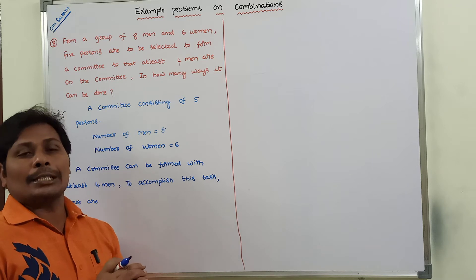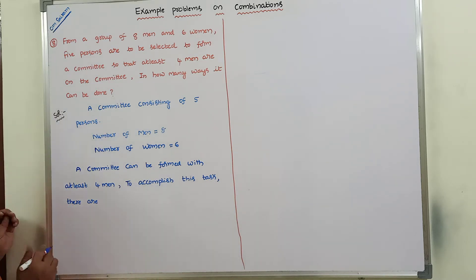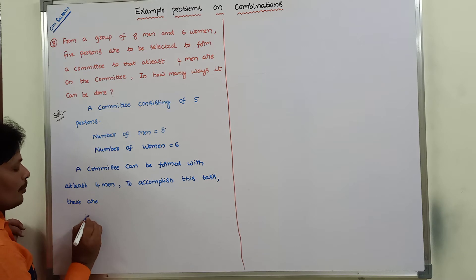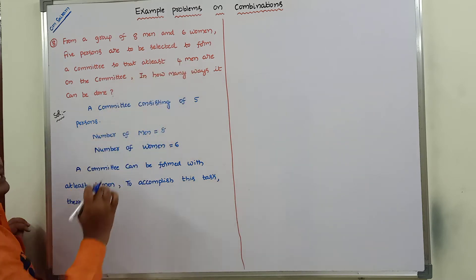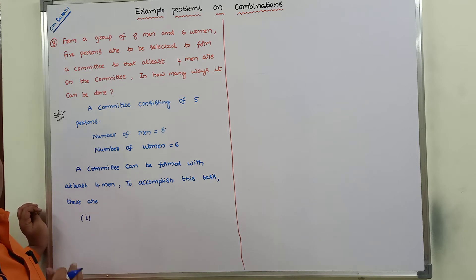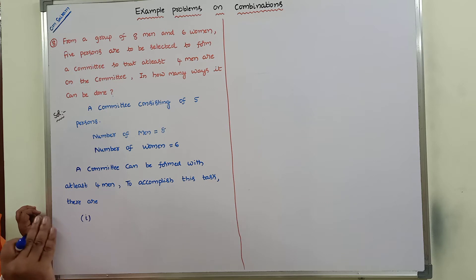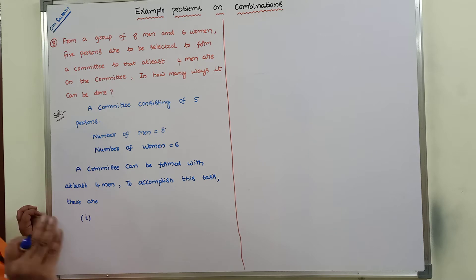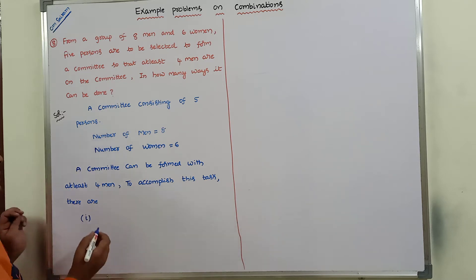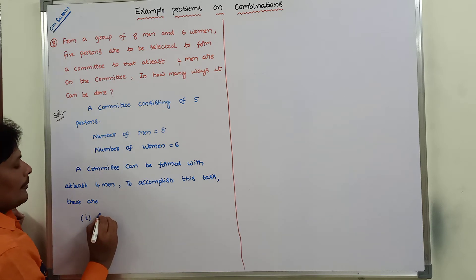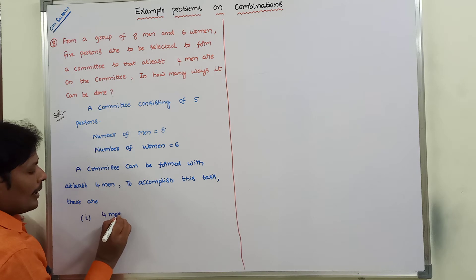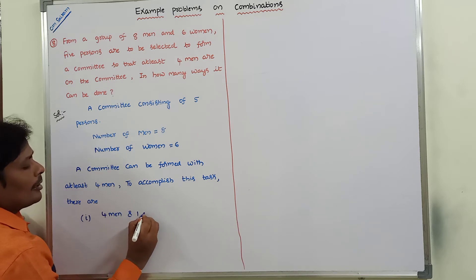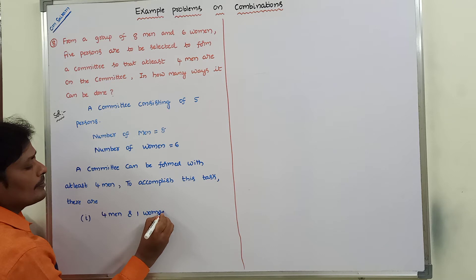To accomplish this task, at least four men means greater than or equal to four. That means we are compulsory considering four men among the eight men. The first possibility is four men and one woman, since we already have four men and the total committee size is five, we select only one woman from the six women.